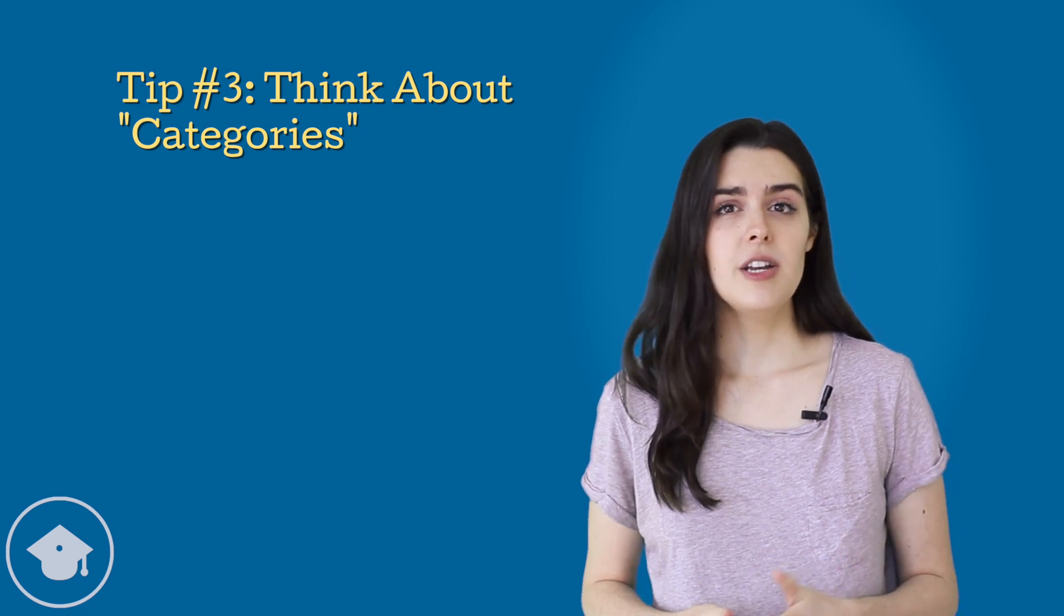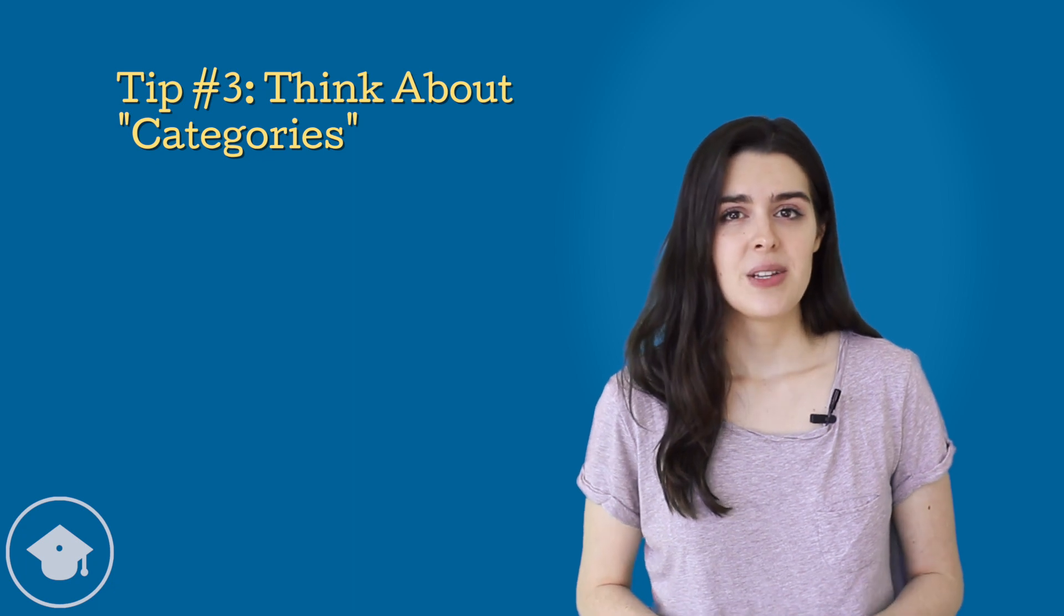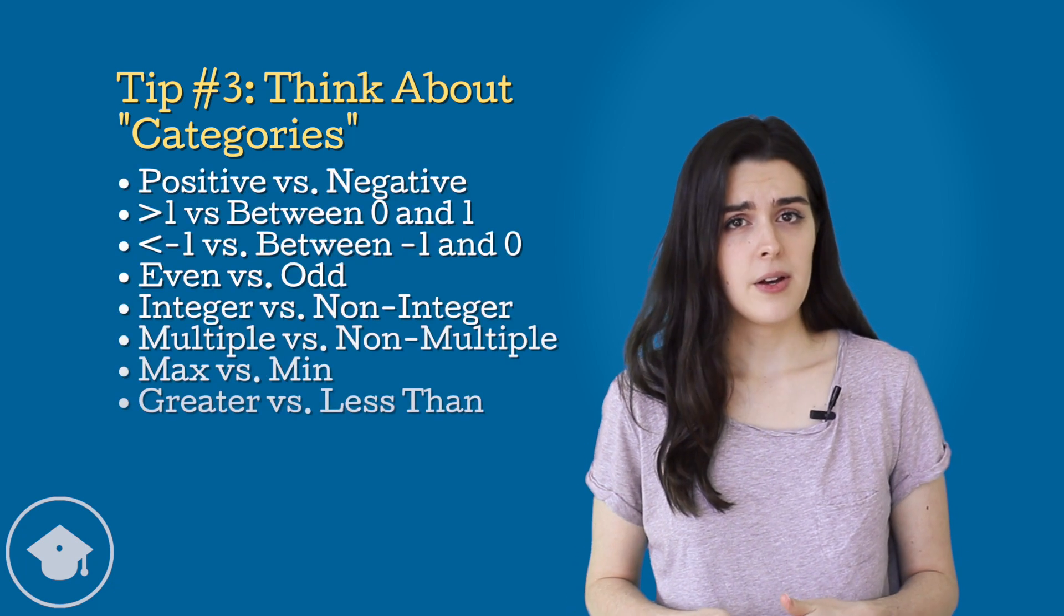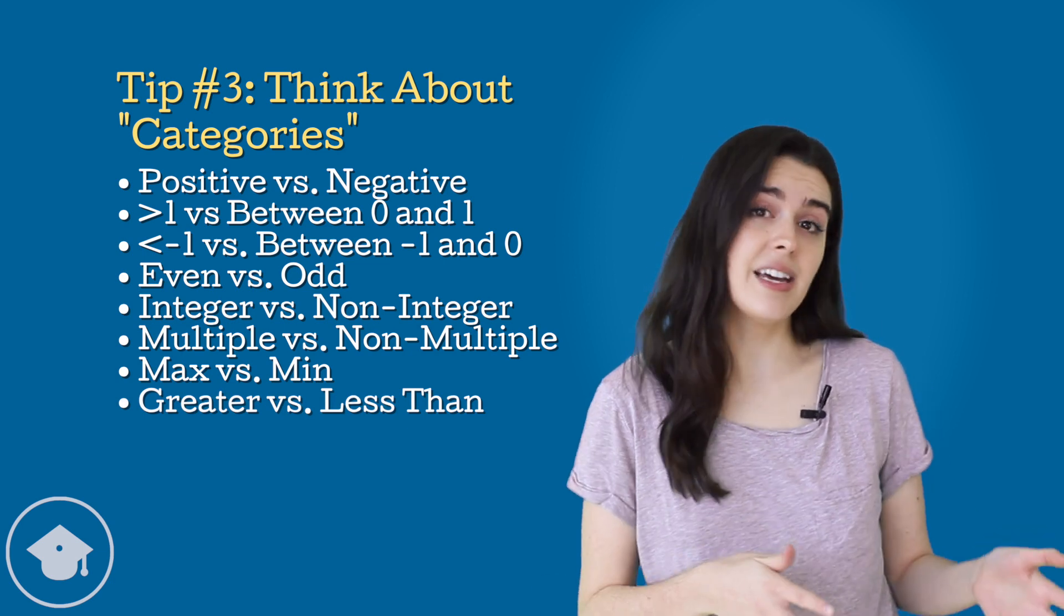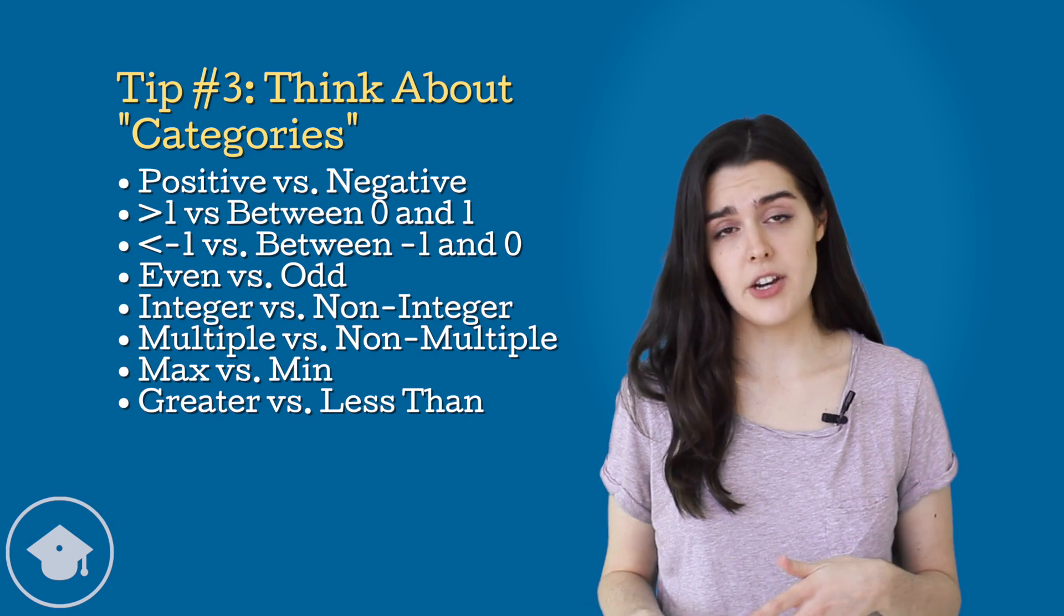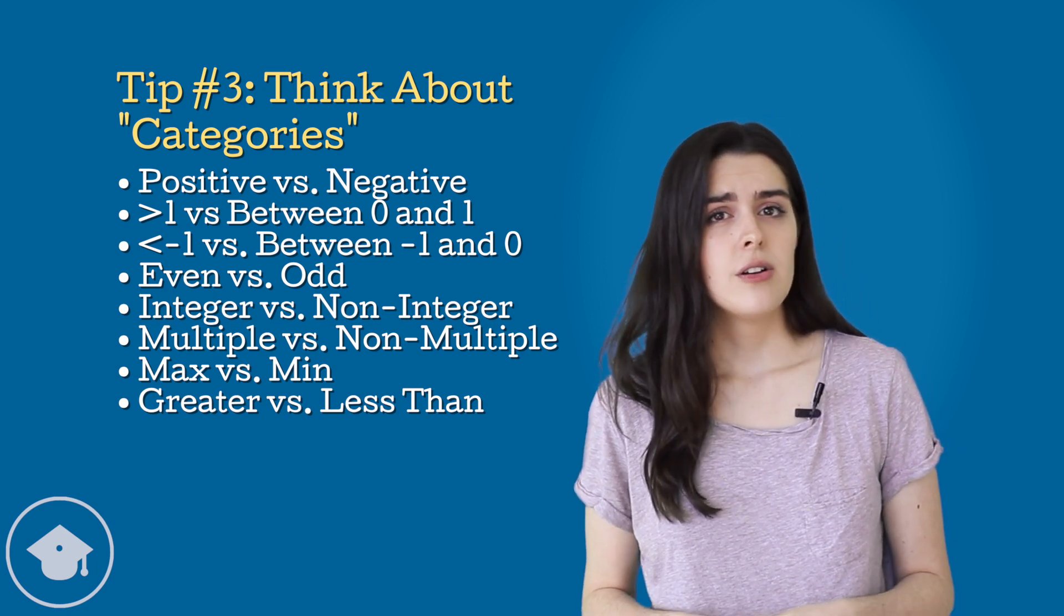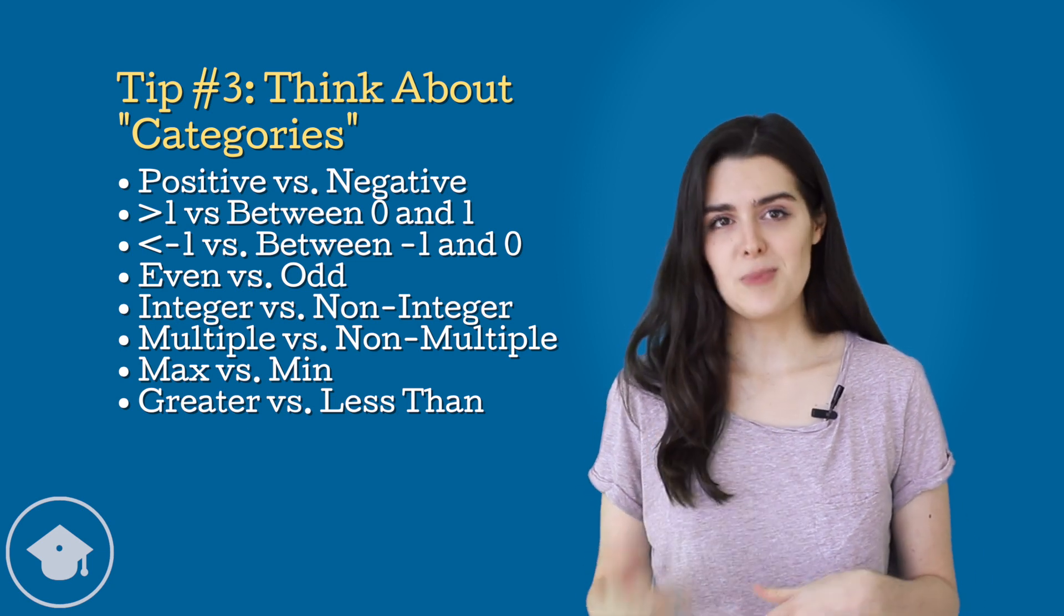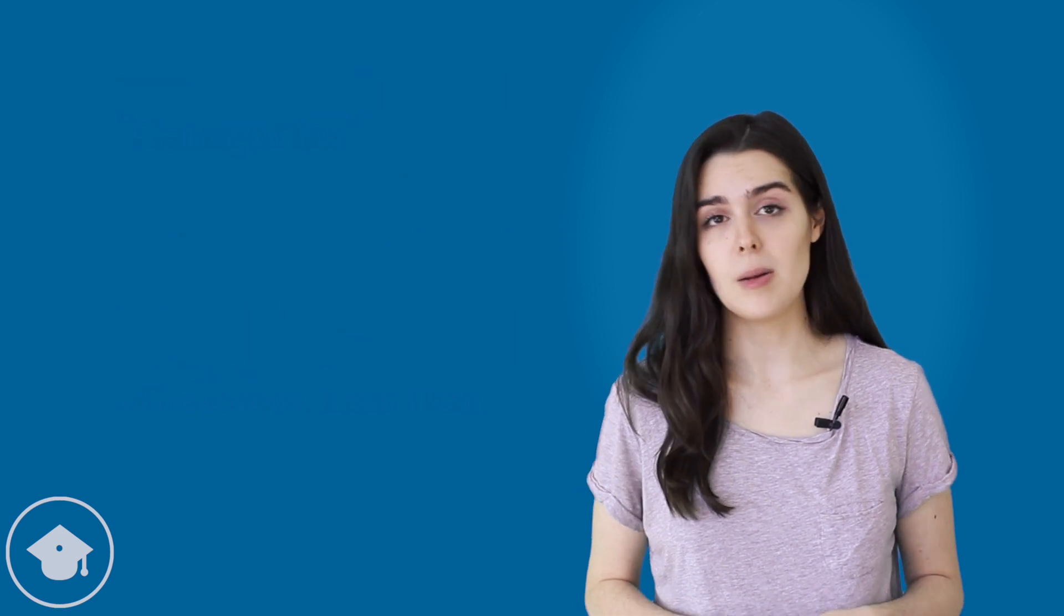So to determine if a category will affect our answer, we can pick one number from each category to test. Some important categories to think about testing are positive versus negative, greater than 1 versus between 0 and 1, as well as less than negative 1 versus between negative 1 and 0, even versus odd, integer versus non-integer, multiple of x versus non-multiple of x, maximum value versus minimum value, and greater magnitude versus lesser magnitude compared to another number in the problem.